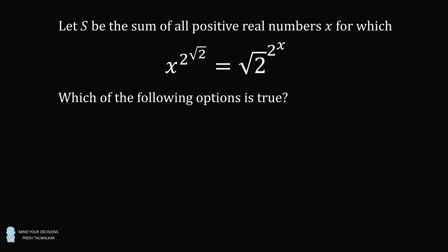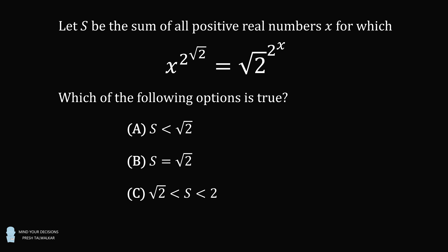Which of the following options is true? a. s is less than square root of 2. b. s is equal to square root of 2. c. square root of 2 is less than s is less than 2. d. 2 is less than or equal to s is less than 6. e. 6 is less than or equal to s.